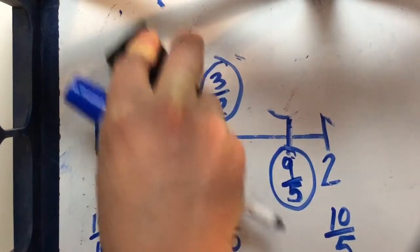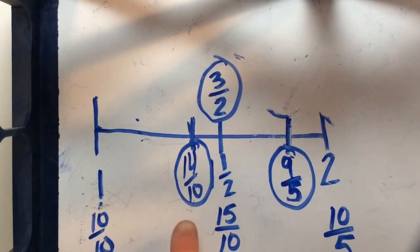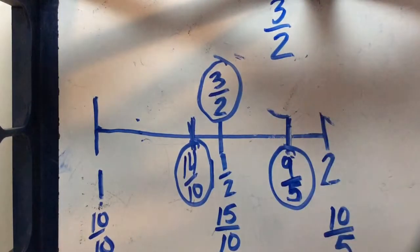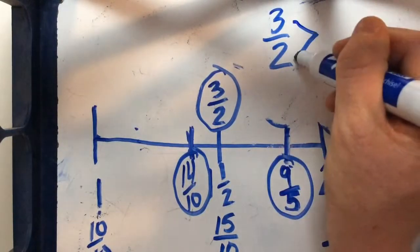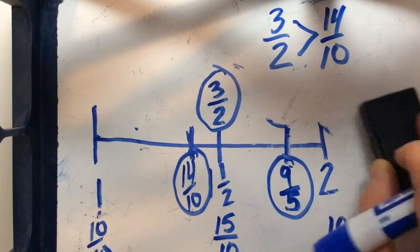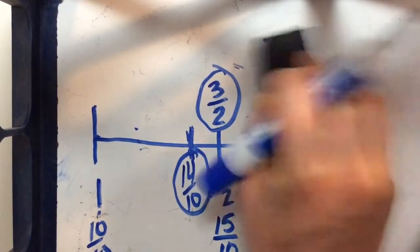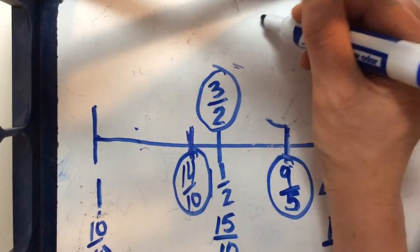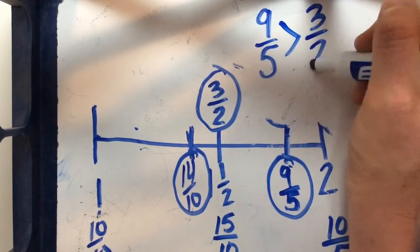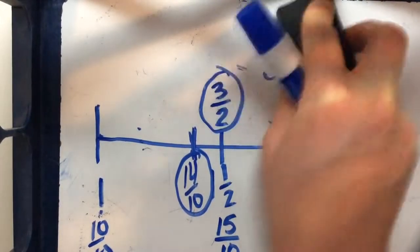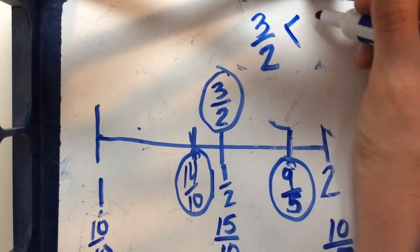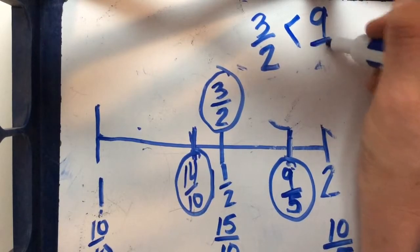So now we can look at our number line and it can help us very easily compare them. I can see, for example, that 3 halves is greater than 14 tenths. I can also see that 9 fifths is greater than 3 halves. Or if I want to write it the other way around, I could say 3 halves is less than 9 fifths.